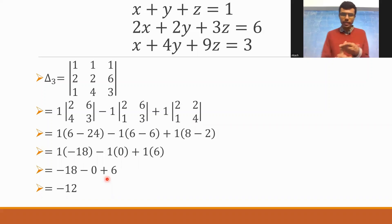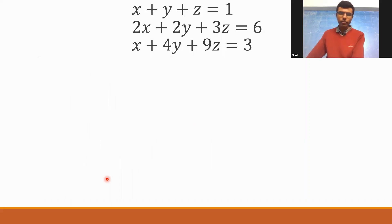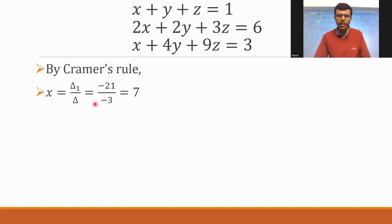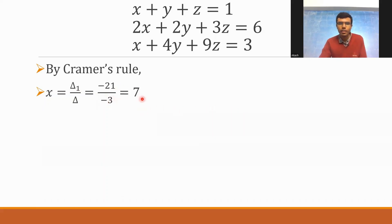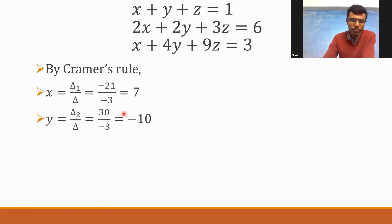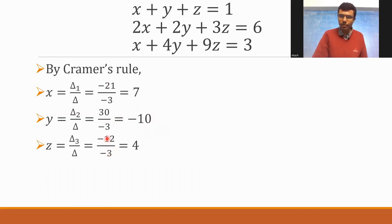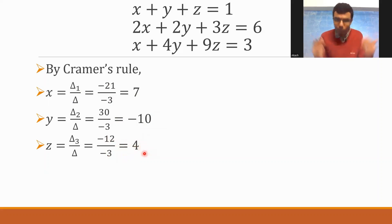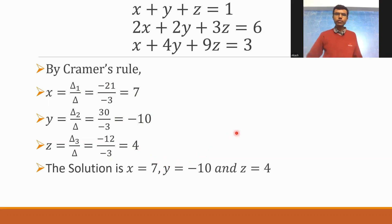My delta 1, delta 2, delta 3, and delta are all done. By Cramer's rule: x is delta 1 by delta, which is minus 21 by minus 3, equal to 7. Y is delta 2 by delta, which is 30 by minus 3, equal to minus 10. And z is delta 3 by delta, which is minus 12 by minus 3, equal to 4. So my solution is x = 7, y = −10, and z = 4.